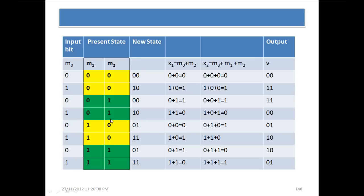For present state 01 with input bit 1, the output will be 00. The 0 is moved to M2 and 1 is moved to M1, so the new state becomes 01 as shown.